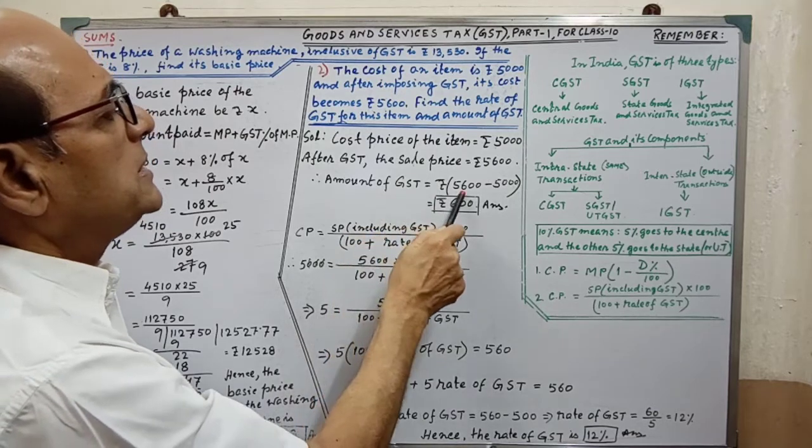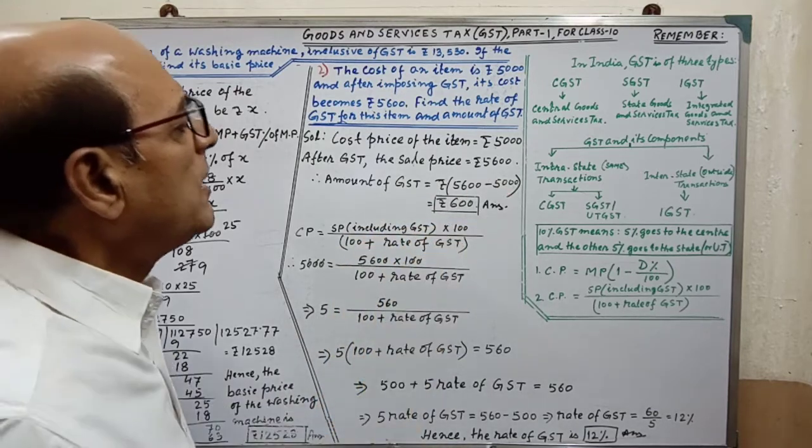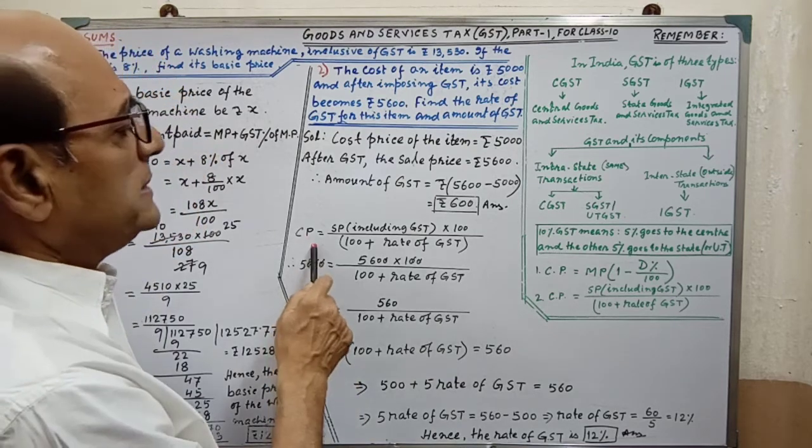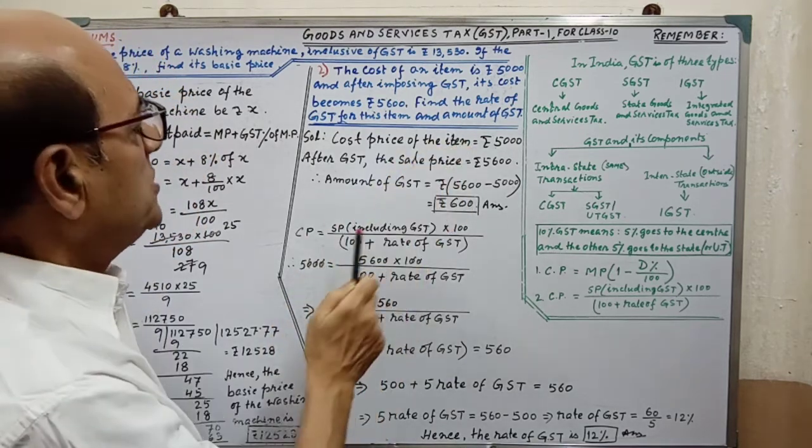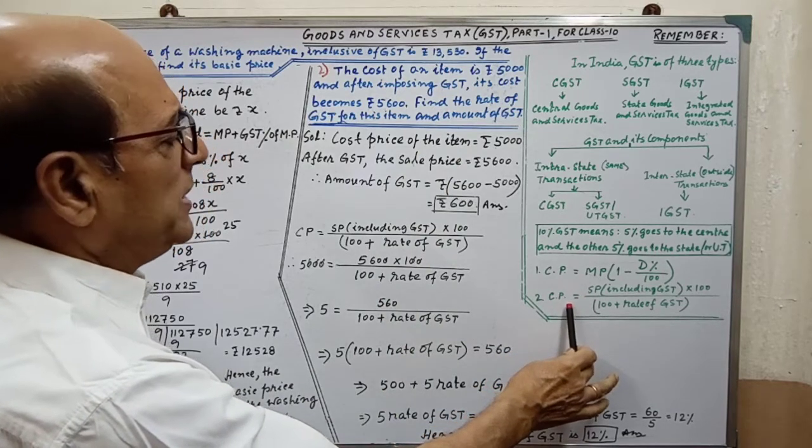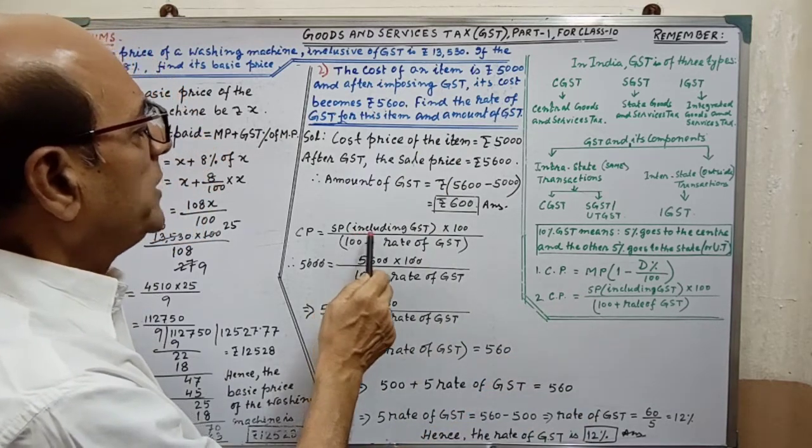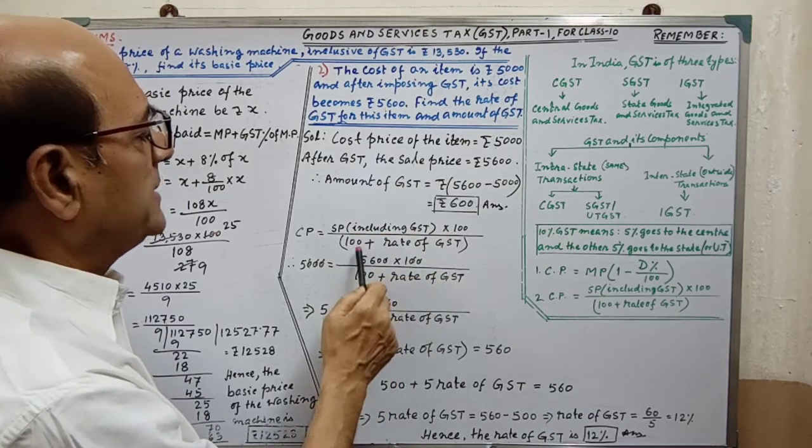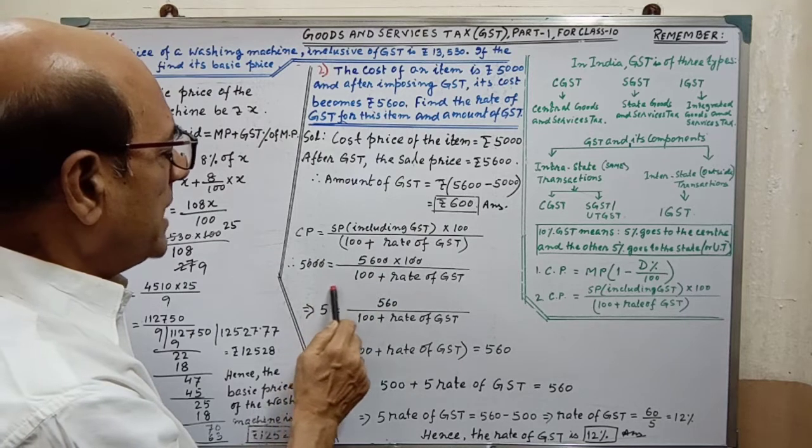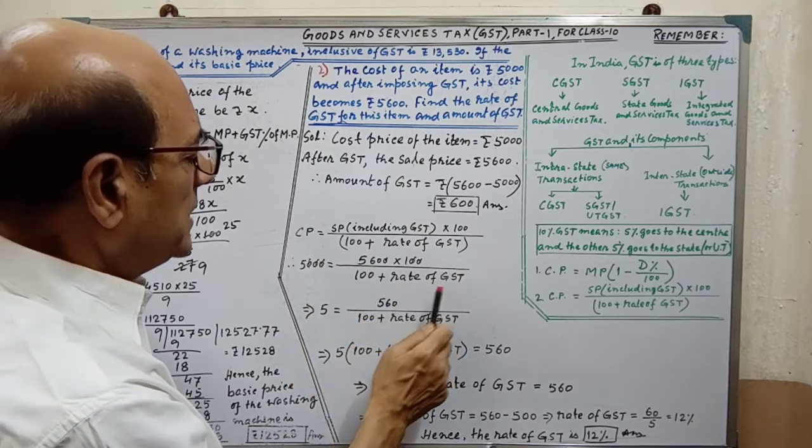Amount of GST is Rs. 600. Then we have to find out the rate of GST. By applying formula we will get it: CP equal to SP into including GST into 100 by this. After writing the formula we have to put the relevant values.